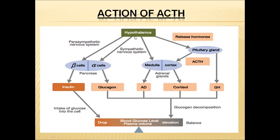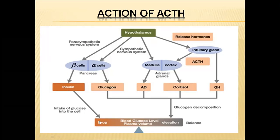The hypothalamus sends signals via neurons to the beta and alpha cells of the pancreas to release insulin and glucagon respectively. Neurons also send signals to the medulla and cortex of adrenal glands to release epinephrine and cortisol. Hypothalamus also sends neurohormones to the pituitary gland to release ACTH, which then stimulates the cortex to release cortisol. Among all seven hormones, only insulin and somatostatin decrease blood glucose levels, while glucagon, epinephrine, cortisol, ACTH, and growth hormone all increase blood glucose levels.